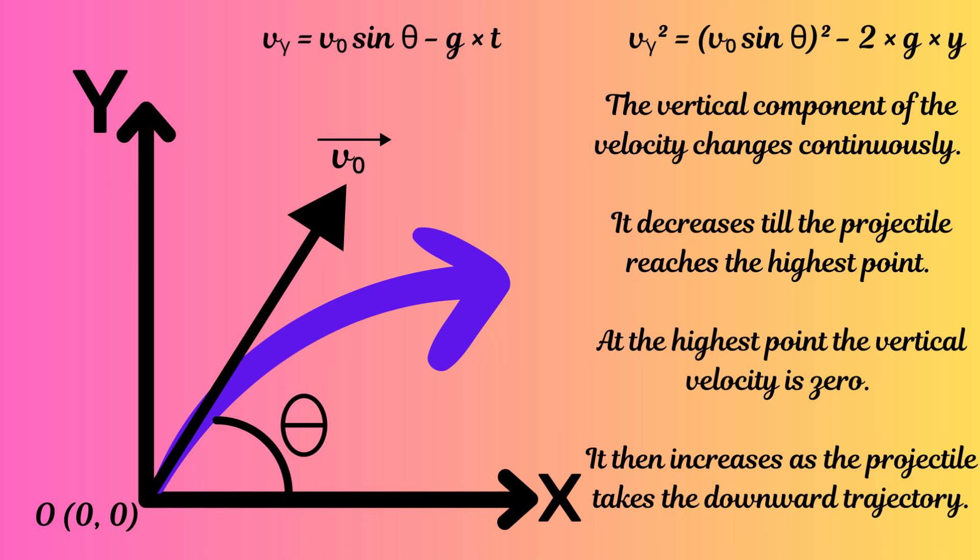When the vertical velocity becomes zero, the projectile has reached its highest point. From here it falls downwards and its speed continues to increase due to earth's gravitational pull. In our convention, from the highest point onwards the velocity grows more and more negative, since the downward direction is negative y for us.